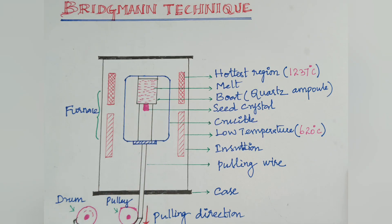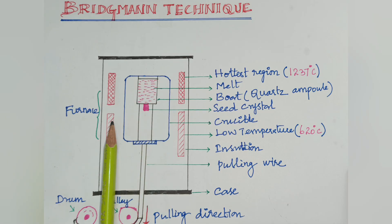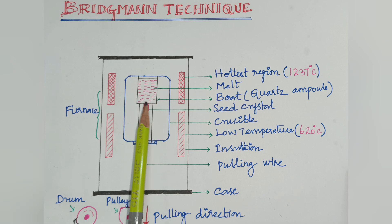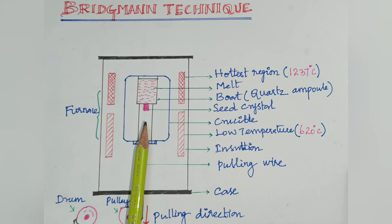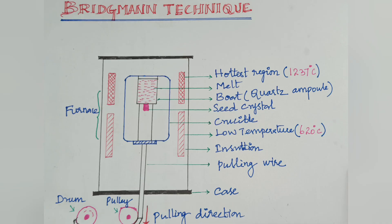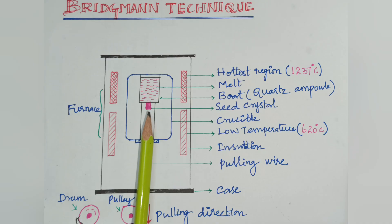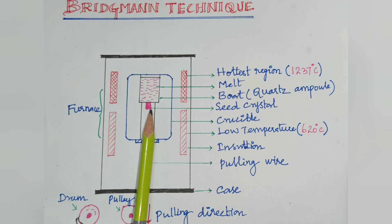Then the crucible with molten liquid is slowly moved to the lower portion of the furnace, where the temperature is 620 degrees Celsius. Now the molten state moves slowly in the downward direction, so the lower portion temperature causes the seed crystal to form — that is, a single crystal is formed at the tip of the crucible.